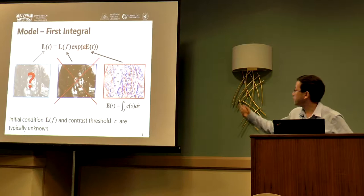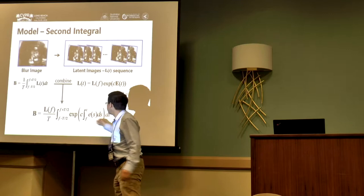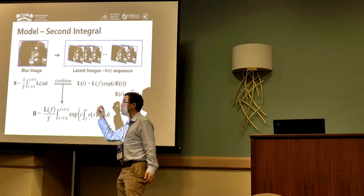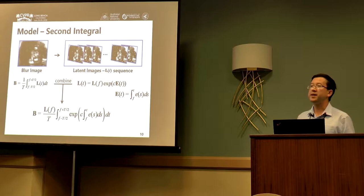If we put two things together, we have a double relation. Here is the relation between the event and the event integration. If we put two things together, we combine and have this twice or second integral relation. Since we sample and record this event, the first integration gives you the change in that interval and the latent image. The second integral gives you the blurry image.